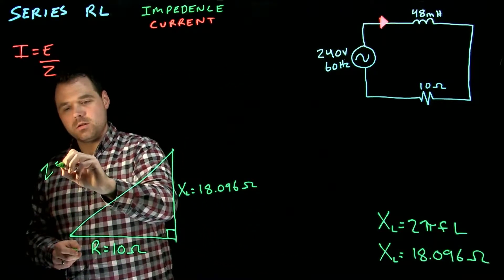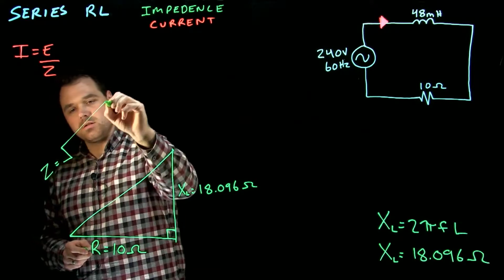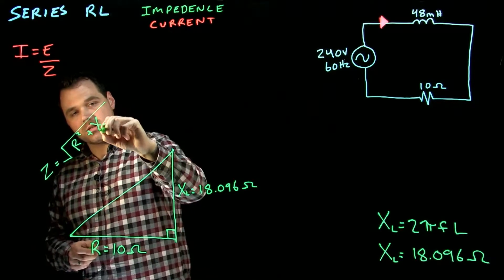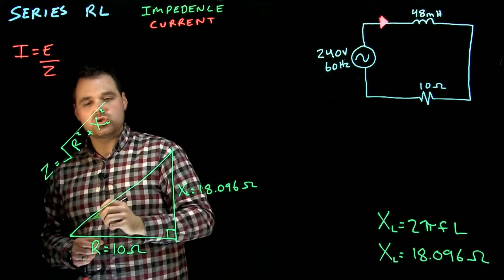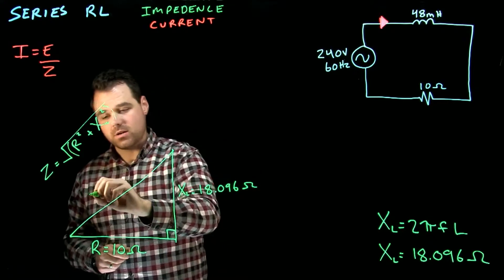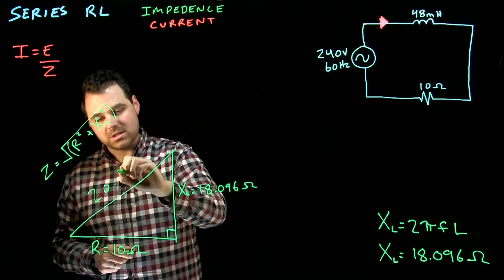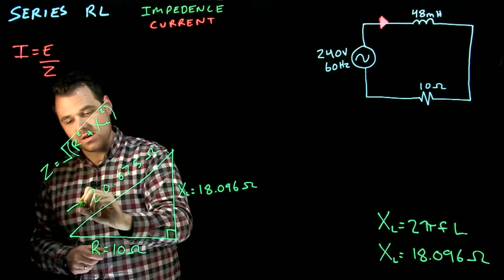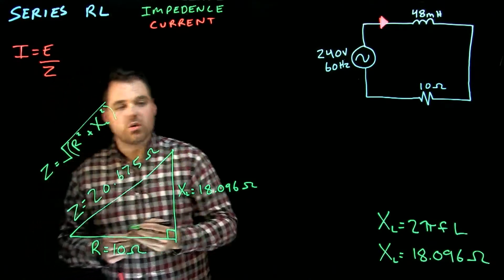So we are going to go Z equals the square root of R squared plus X, in this case XL, squared. And remember those would be in brackets. In this case we get an impedance of 20.675 ohms. And that is our Z total for the circuit.